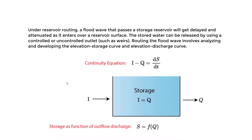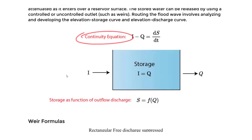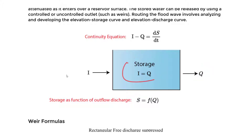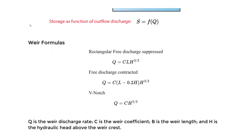For reservoir routing, it depends on the continuity equation just like channel routing, where the change in storage with respect to time is the inflow minus the outflow. Storage is a function of the outflow discharge Q_out. Note how this differs from channel routing: we do not have a wedge shape or prism storage that occurs in channel routing.